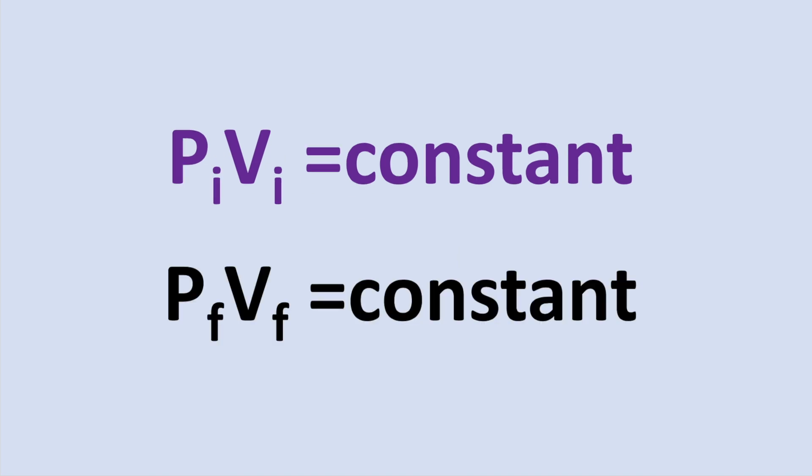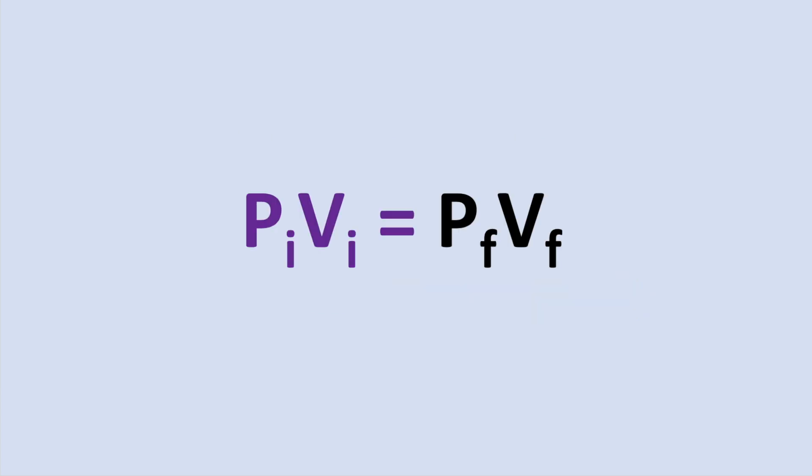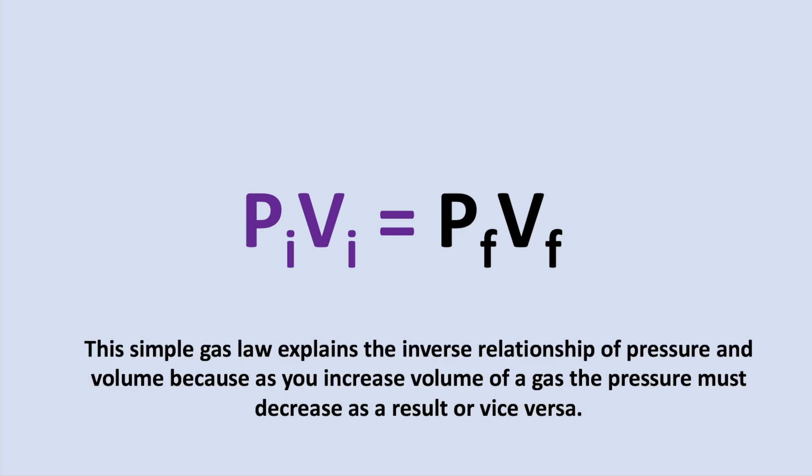Because this relationship always equals a constant, we can set the following two equations equal to one another as long as temperature and the number of moles is held constant. Where P_i and V_i are your initial pressure and volume of your gas and P_f and V_f being your final pressure and volume. This simple gas law explains the inverse relationship of pressure and volume because as you increase volume of a gas, the pressure must decrease as a result or vice versa.